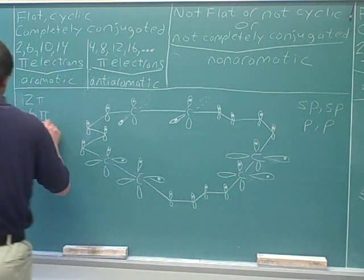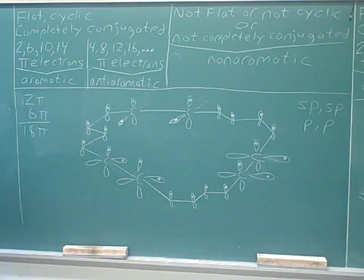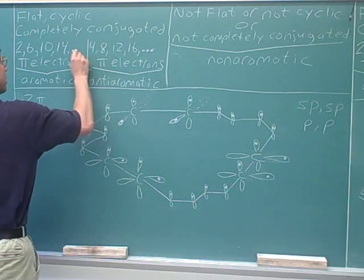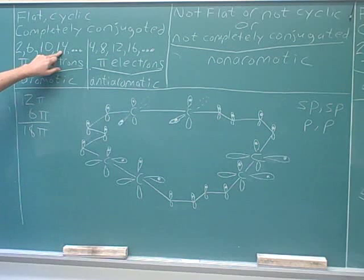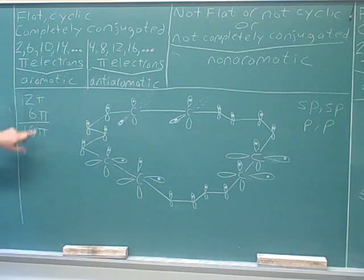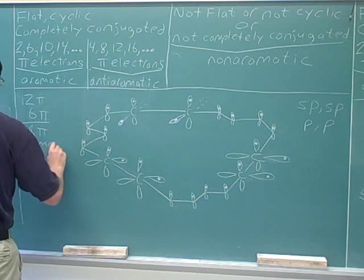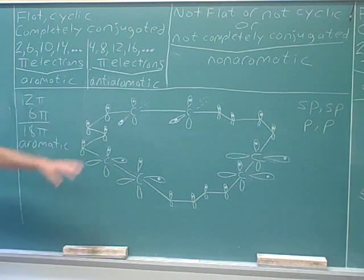So the total number of pi electrons we're counting is 18. If you take 14 and add 4, you get 18, which is in the list for being aromatic. So this compound is aromatic.